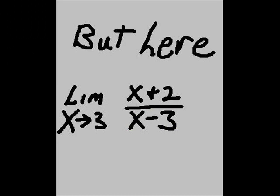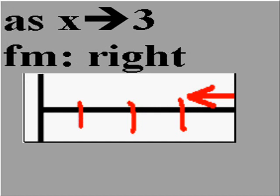But here in this problem of x plus 2 over x minus 3, as x approaches 3 from the right,